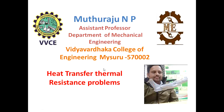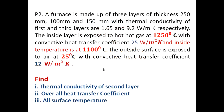Heat transfer thermal problem number two. The problem statement is: a furnace is made up of three layers of thickness 250 mm, 100 mm, and 150 mm with thermal conductivities of the first and third layers being 1.65 and 9.2 Watt per meter Kelvin respectively. The inside layer is exposed to hot gas at 1250 degree Celsius with convective heat transfer coefficient 25 Watt per meter square Kelvin, and inside temperature is 1100 degree Celsius. The outside surface is exposed to 25 degree Celsius with convective heat transfer coefficient 12 Watt per meter square Kelvin. Find the thermal conductivity of the second layer, the overall heat transfer coefficient, and the surface temperatures.